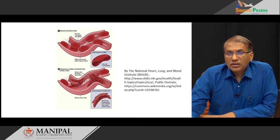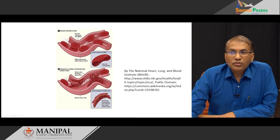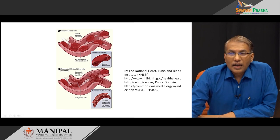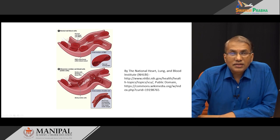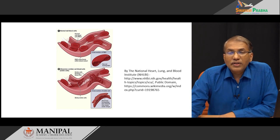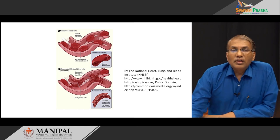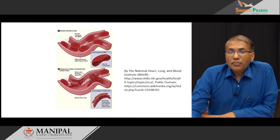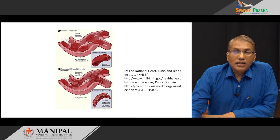This precipitation occurs especially in the deoxygenated state. Once this forms, it causes distortion of the red blood cells, and because of this distortion they will not be able to flow freely in the blood vessels. They can get clogged, sequestrate, and cause severe infarction or painful crisis called sickle cell crisis. Such cells are more fragile, get recognized by the reticuloendothelial system, and are destroyed, leading to hemolytic anemia.